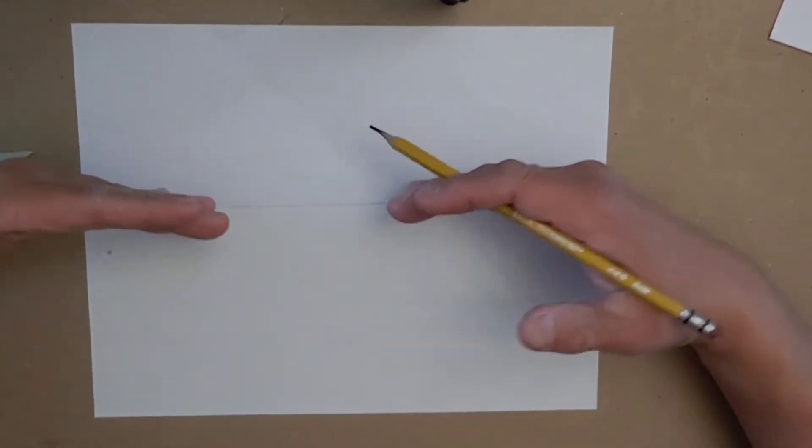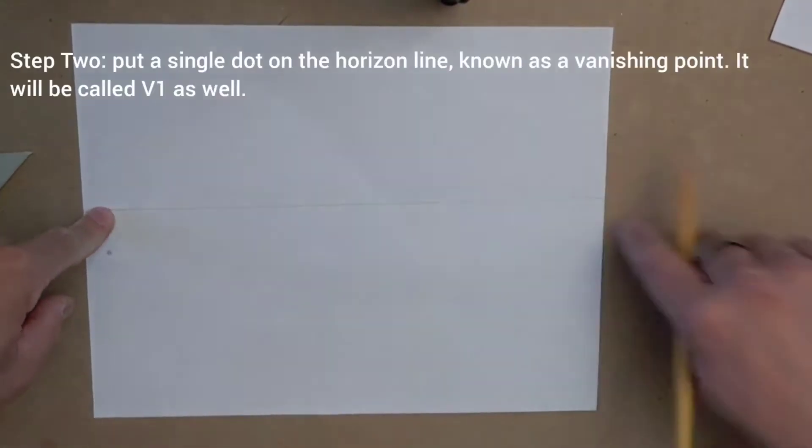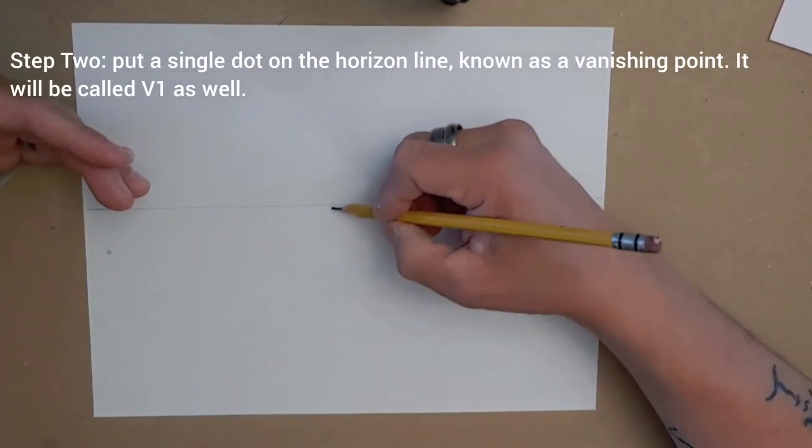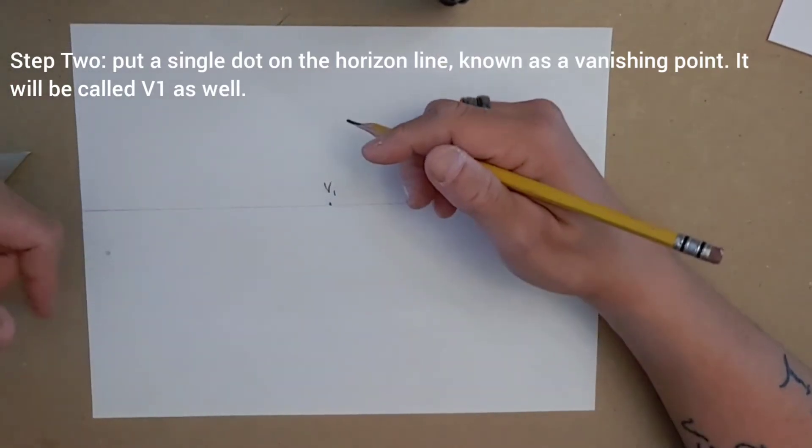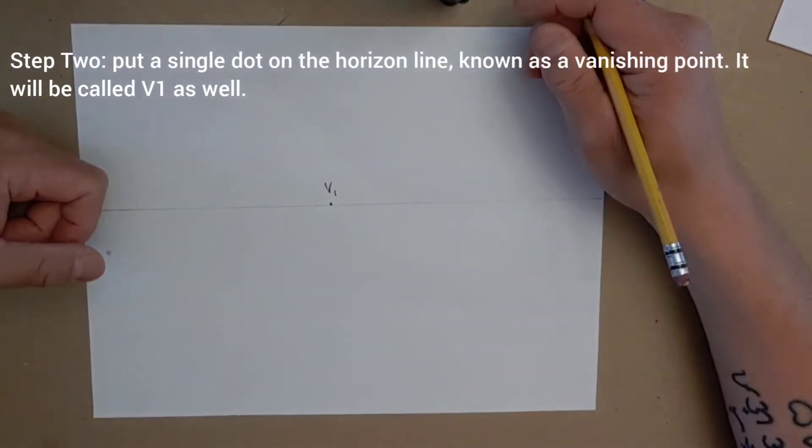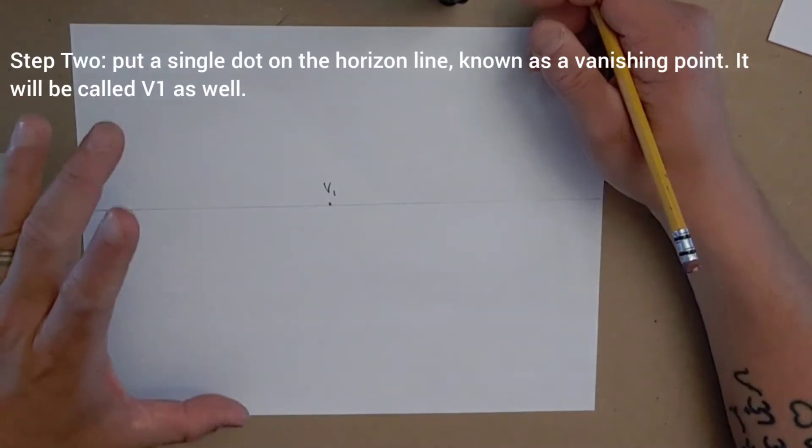And on this line, after we have that established, I'm going to put a dot on the horizon line, known as a vanishing point. For simplicity's sake, I'm going to put the dot in the middle, and I'll also label it V1, just so you don't get confused with some other dots I may end up drawing.